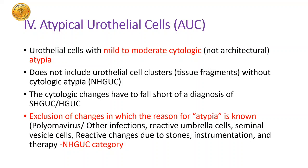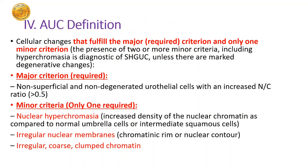Now we come to the second category which is causing a lot of problems — it causes pathologists to sit on the fence or use it as a wastebasket terminology, just like other classification systems. This is called Atypical Urothelial Cells, or AUC. Please remember it has a strict definition including urothelial cells with mild to moderate cytologic atypia. It does not include tissue fragments without cytologic atypia, and these changes have to fall short of the diagnosis of suspicious for high grade or high grade.